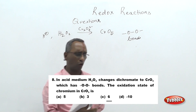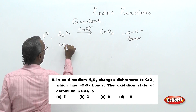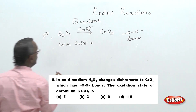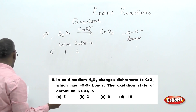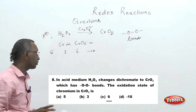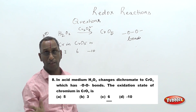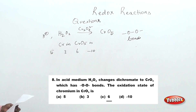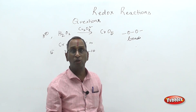The question asks: what is the oxidation state of chromium in CrO₅? The choices given are: 5, 3, 6, and −10. Since chromium compounds always serve as oxidizing agents with a positive oxidation state, −10 is immediately ruled out. This question combines d-block elements with redox equations.